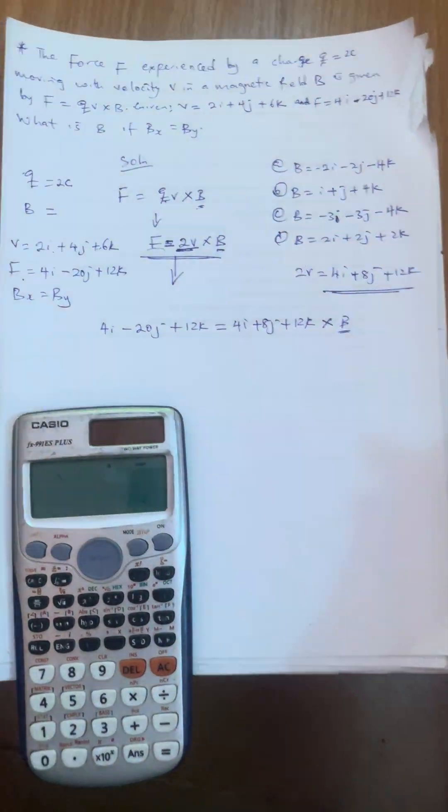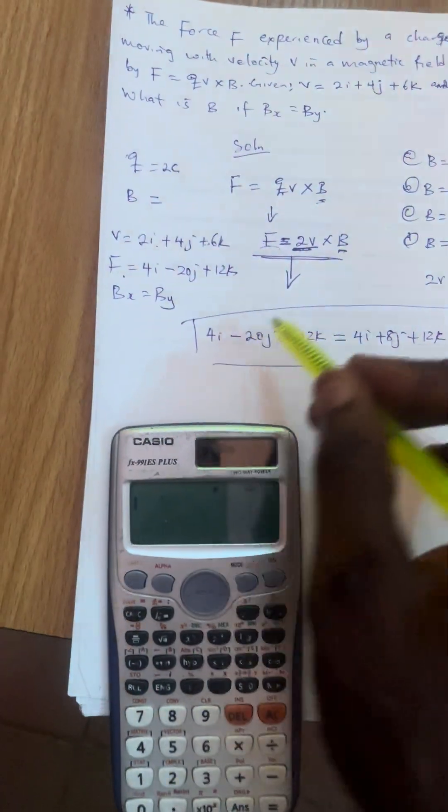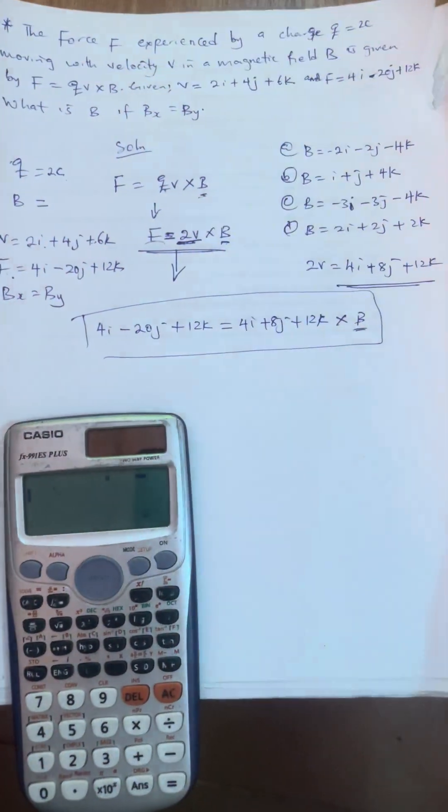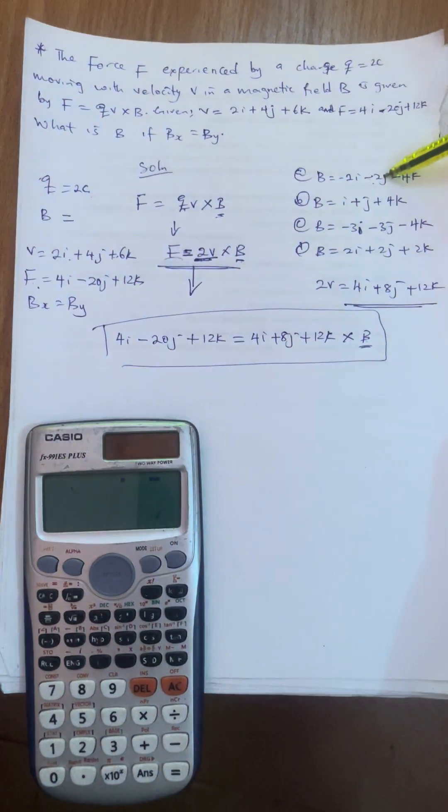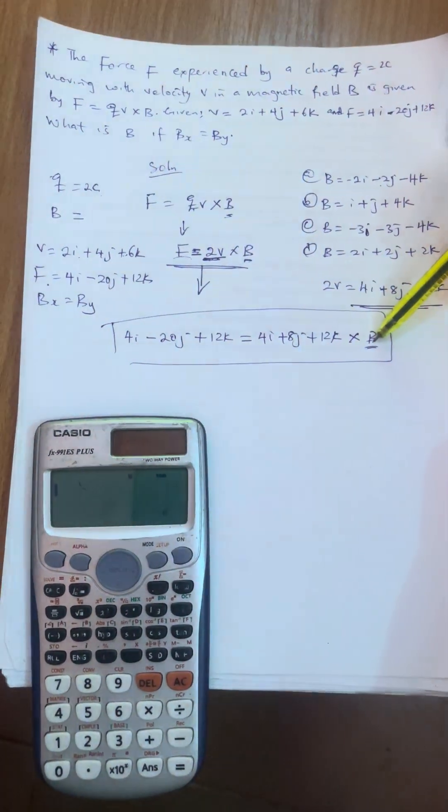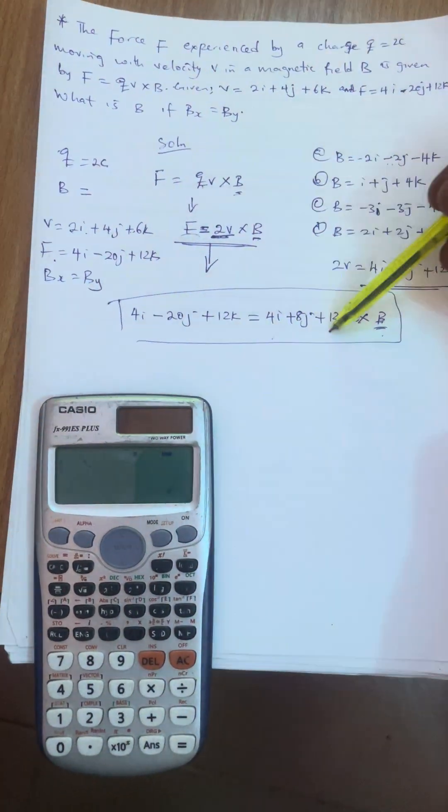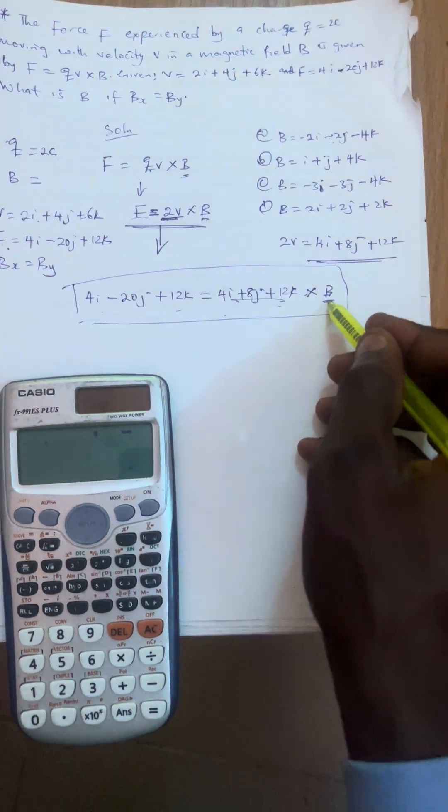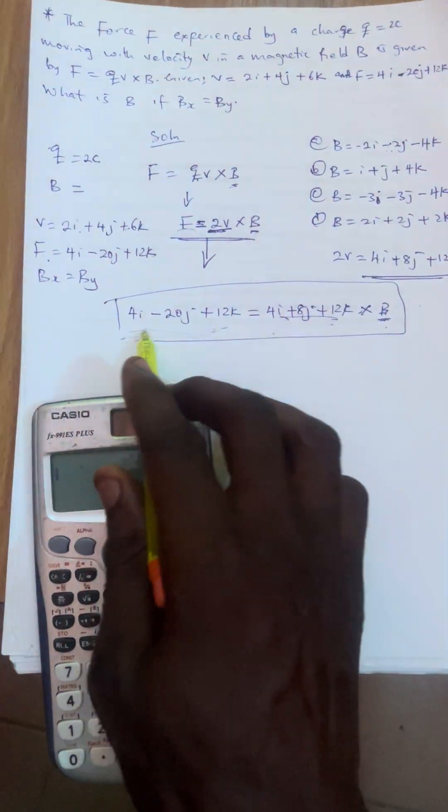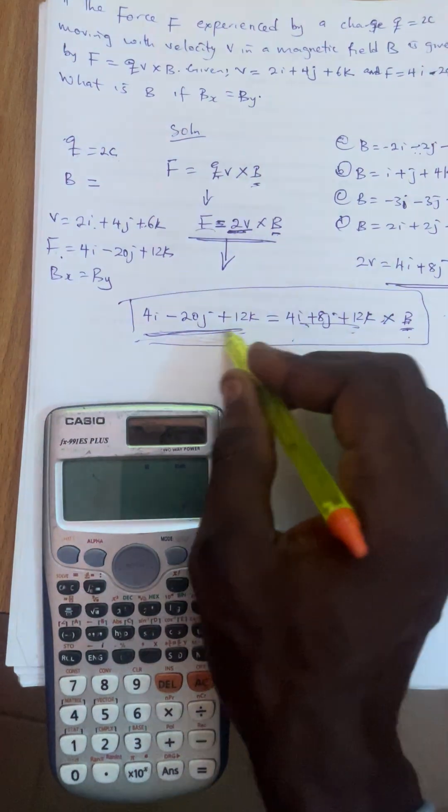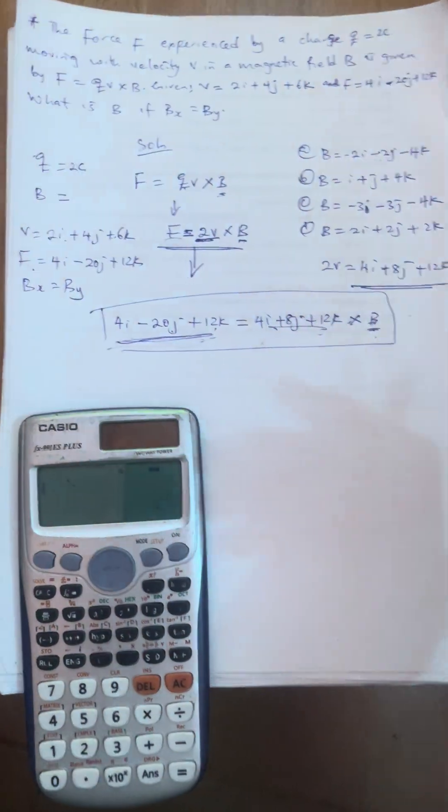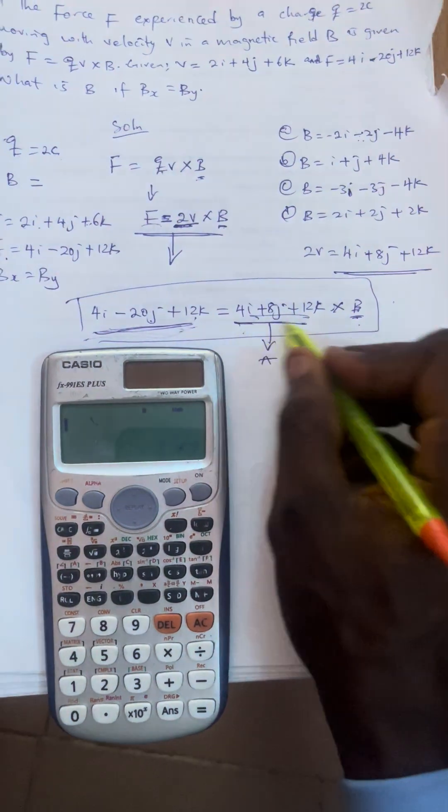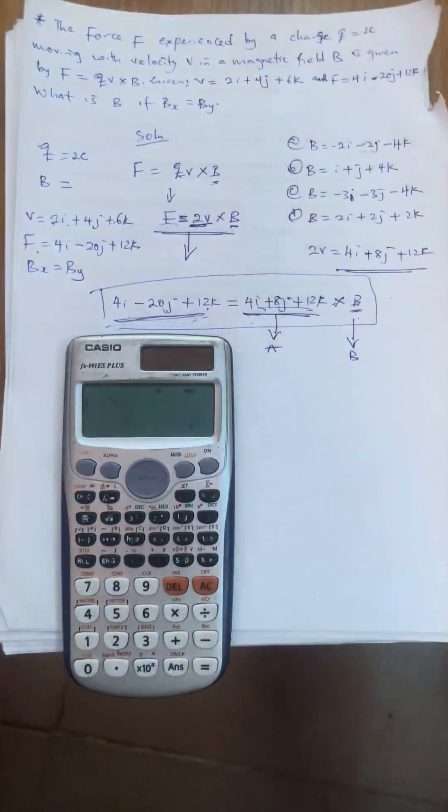This is what I'm going to use to find the correct answer in this option. Get the idea well. The idea is that I'm going to be substituting the value of options here for my B. Anyone I can cross with this 2V that will give me this right side is the right answer. That is, I have the 2V here crossed with each of these options. The one that gives me the answer here is the right answer. Anyone that doesn't give me 4I minus 20J plus 12K is not the right answer.